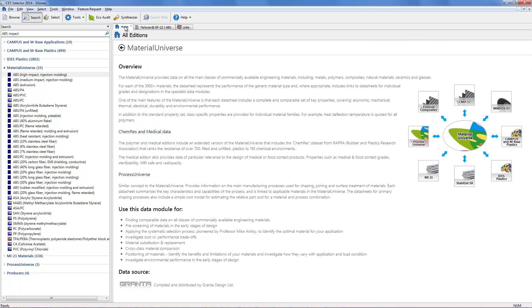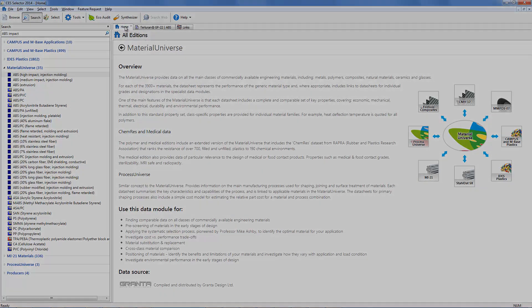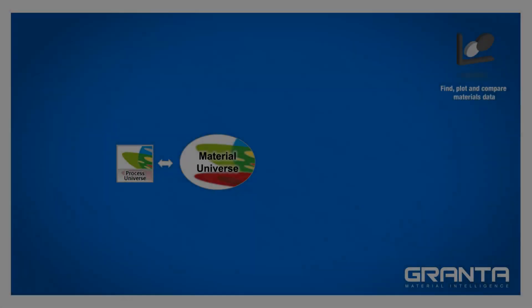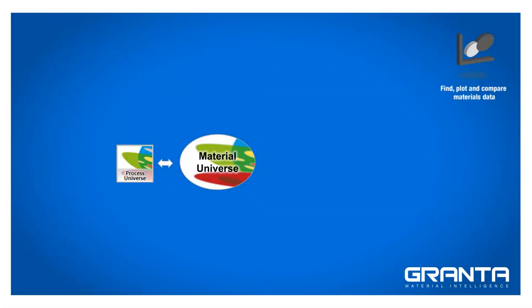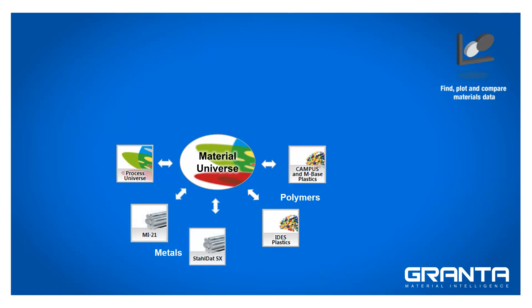Then drill down to in-depth information on individual grades and specifications. The datasets in CS Selector cover manufacturer's datasheets for polymers, global standards and designations for metals, and design data for aerospace alloys and composites.